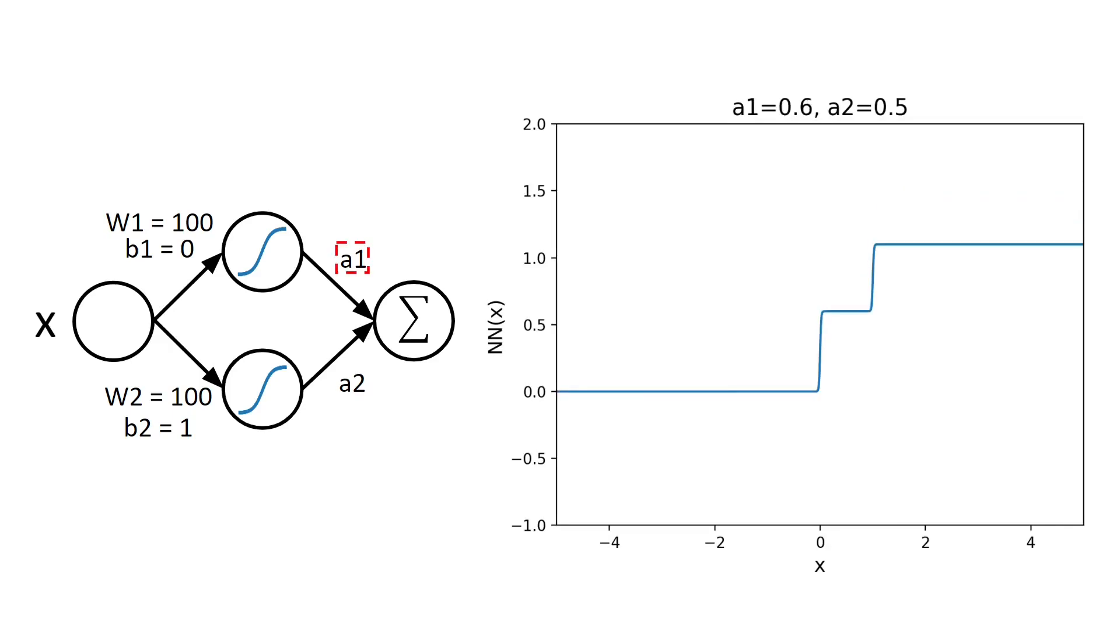Thus, we are able to control when each step happens, and you can see on the right image an illustration of how the output of this neural network looks like when we vary the weight of the first step, a1, and keep the weight of the second step, a2, fixed.